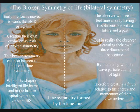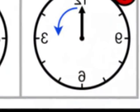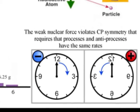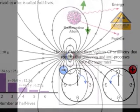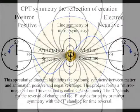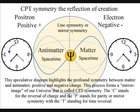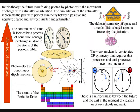This idea is supported by the weak nuclear force being the only known interaction that does not conserve parity and violates CP symmetry. In this theory, the future is unfolding with the movement of charge with matter-antimatter annihilation, representing a fundamental part of the process. The annihilation of the antimatter represents the past with perfect symmetry between positive and negative charge and between matter and antimatter. It is this symmetry that is represented by CP symmetry that is broken by the radiation or radioactive decay of the weak force or interaction.